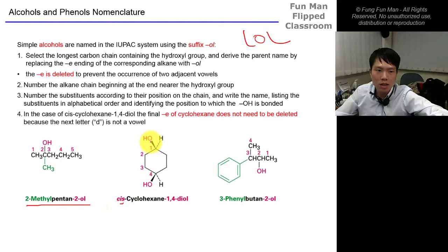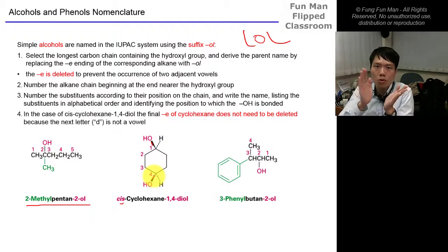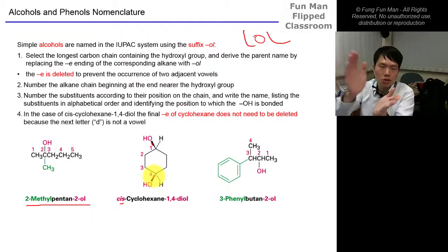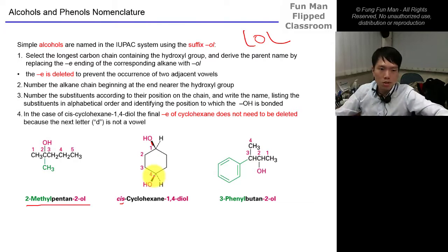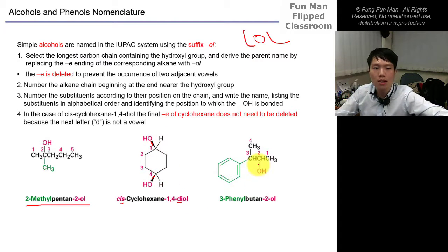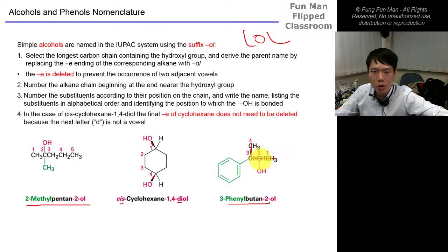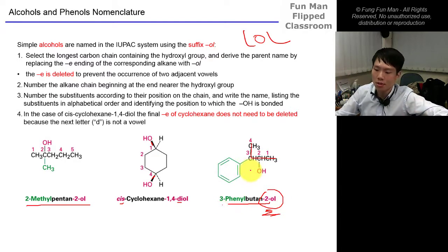For the cyclic example, we have cis because both alcohol groups point in the same direction — so it's cis-cyclohexane-1,4-diol, two alcohol groups. The next example is 3-phenylbutan-2-ol: longest chain is four carbons, alcohol at the second position because it is the main functional group, with a phenyl substituent at the third position.